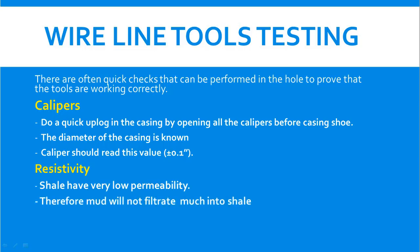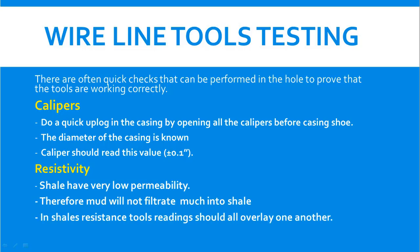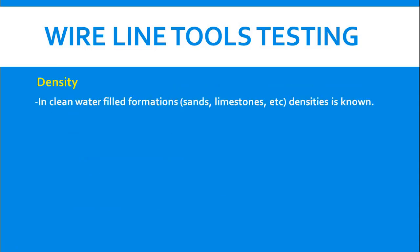For resistivity, we know that shale has very low permeability, therefore mud will not filtrate much into the shale formation. In a shale formation, the shallow resistivity, medium resistivity, and deep resistivity tools should all overlay one another — there will be no separation between the curves. This confirms that the resistivity tool is working correctly.